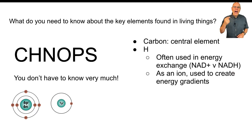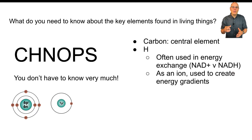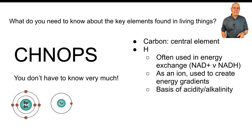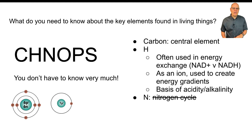Also, hydrogen as an ion — a hydrogen ion, a proton — is often pumped around to create energy gradients. It's very important in the synthesis of ATP. It's also the basis of acidity and alkalinity, which we just talked about.